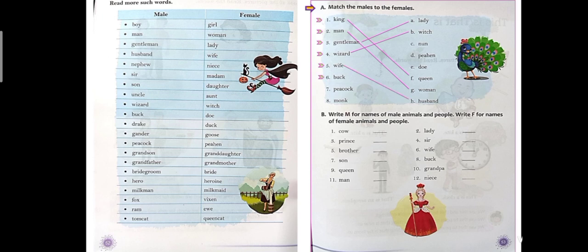Next, buck. The match word is doe. Next, peacock. Next, monk. The match word is nun.